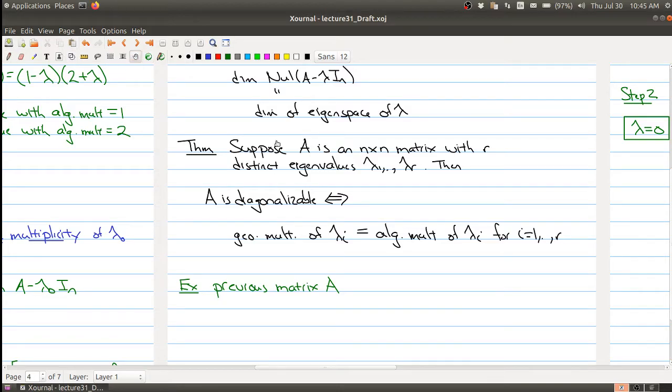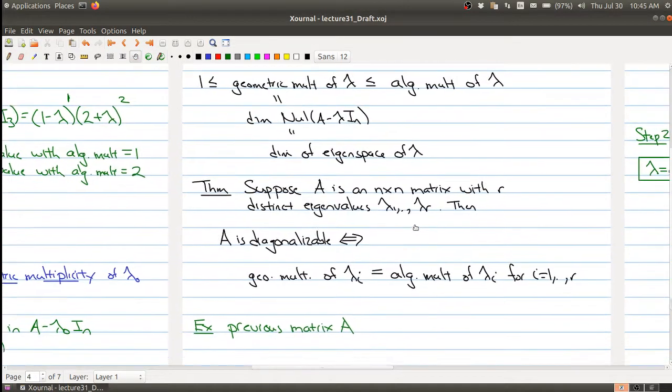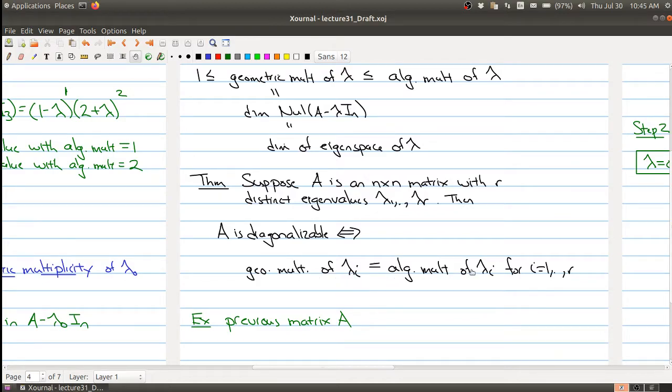In general we have an inequality, but if you have equality for every eigenvalue, then your matrix A is diagonalizable.